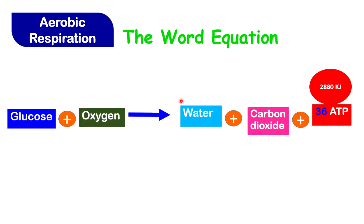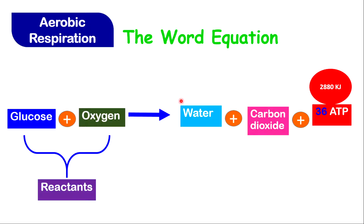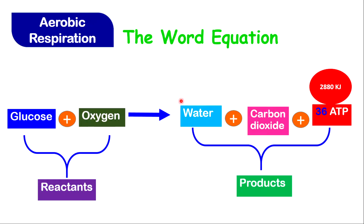The reactants come before the arrow, and after the arrow you have the products. There are three products: water, carbon dioxide, and energy. However, water and carbon dioxide are classified as waste products or byproducts. Therefore, the body will have to excrete these substances because they are waste.